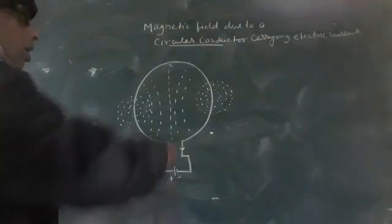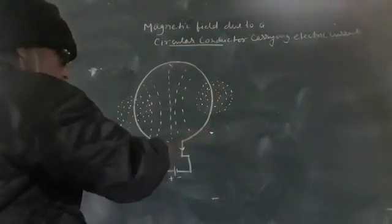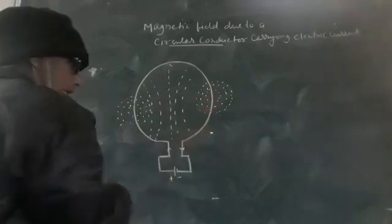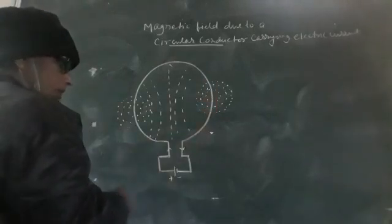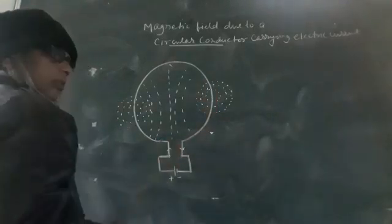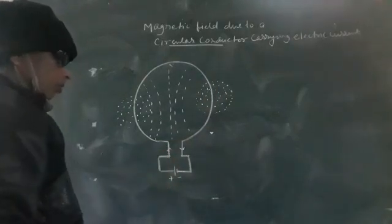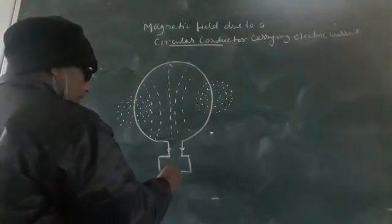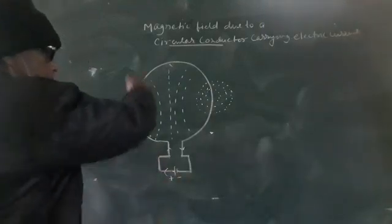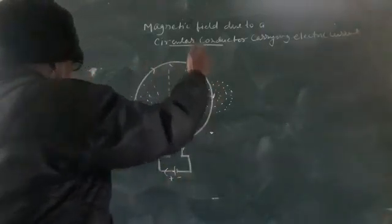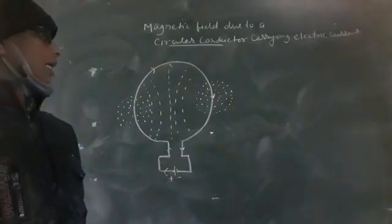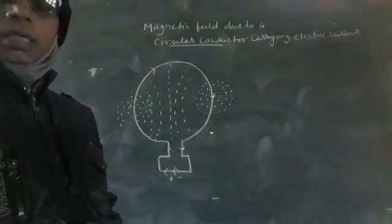So here I have taken a circular wire. Both ends of the wire are connected to a cell so that electric current will flow through the wire. This is known as a current carrying circular conductor.